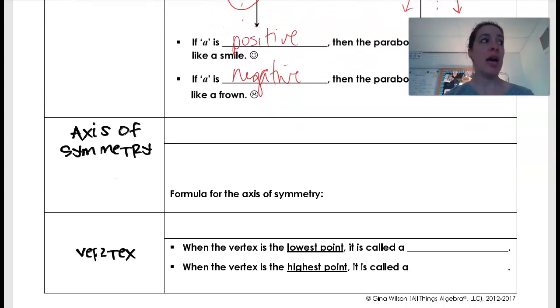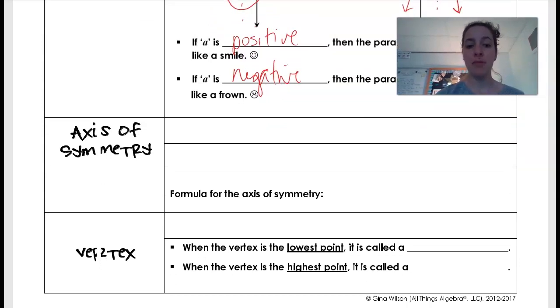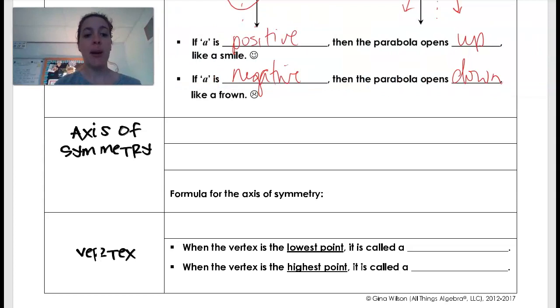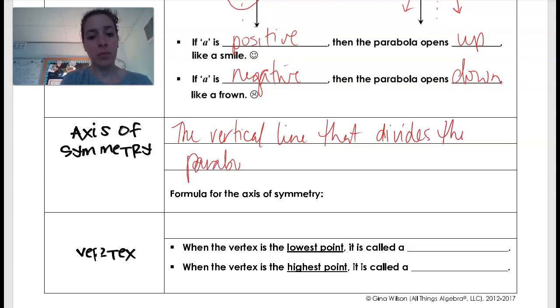So now we're going to be looking at the axis of symmetry. So remember that symmetry, move this over here. If it's symmetrical, that means I can kind of fold it and have that mirror reflection. So that's really what I'm looking at here. So for a parabola, the axis of symmetry is the vertical line that divides the parabola into two equal parts.